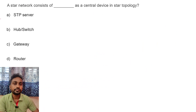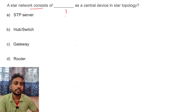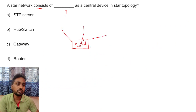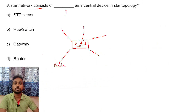A star network — what is the central device in a star topology? In the center, one switch or hub is used in a star topology, and all nodes are connected through that switch. Option B is the right answer.